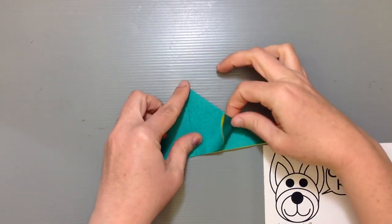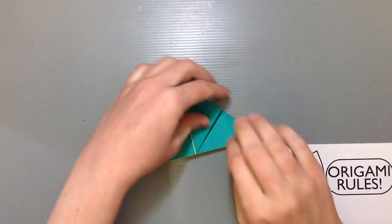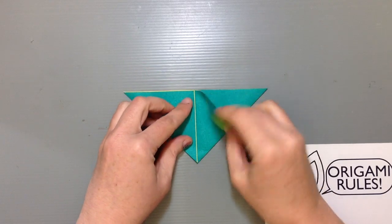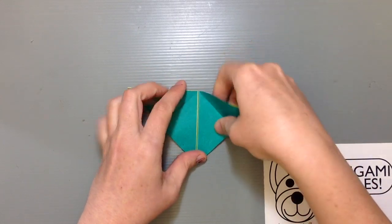Then I'm going to take the bottom corner and fold it up to the top. And I'm going to do that for all four sides. So I'll do the front two, flip it over and do the same thing on the back.